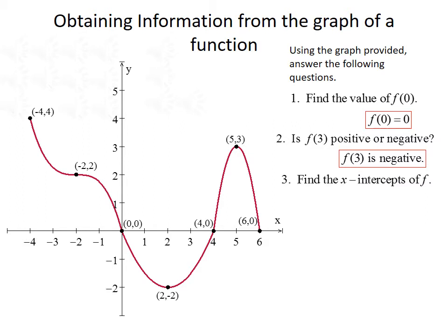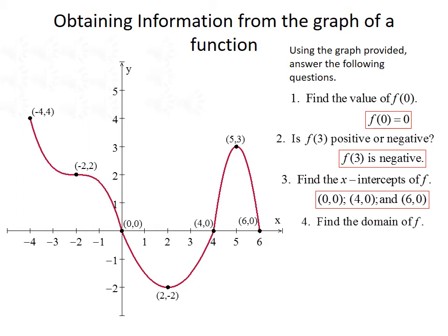Next, we want to find the x-intercepts of the function f — these are the places where the graph crosses the x-axis. Those would be (0, 0), (4, 0), and (6, 0). Then we want to find the domain of f. The domain represents all possible x values. Since our graph starts at x equals negative 4 and goes continuously until x equals 6, our domain is from negative 4 to 6. Since we have solid dots at negative 4 and 6, those endpoints are included, so we use square brackets.